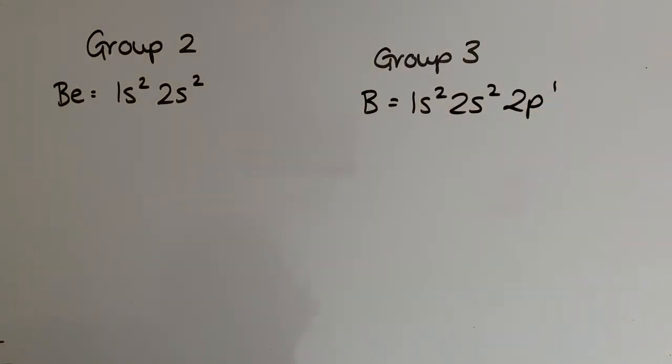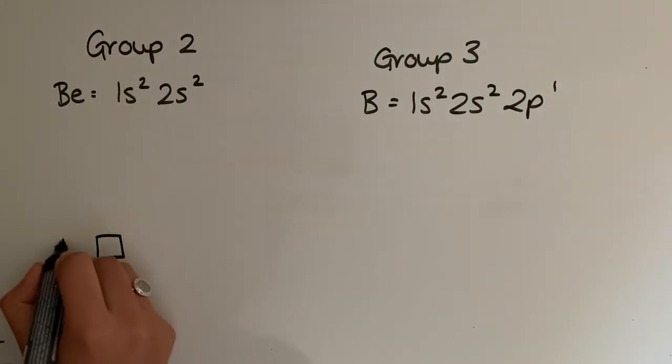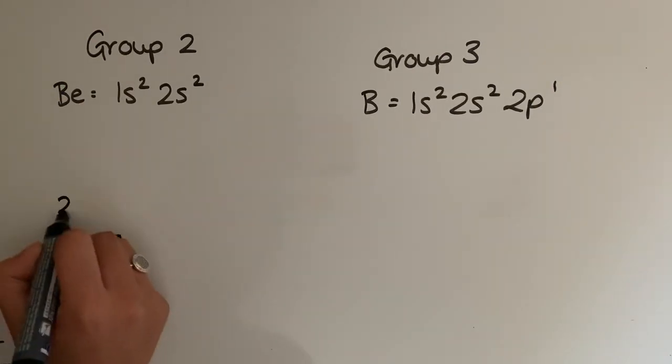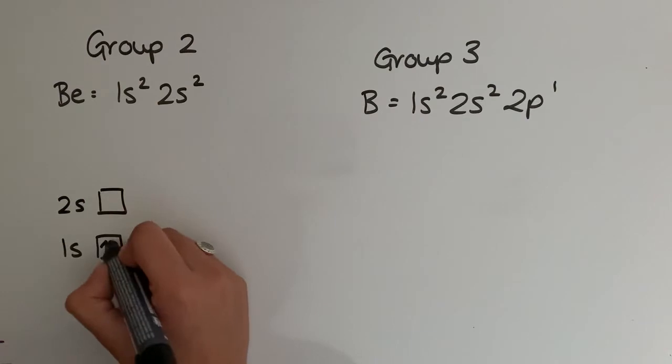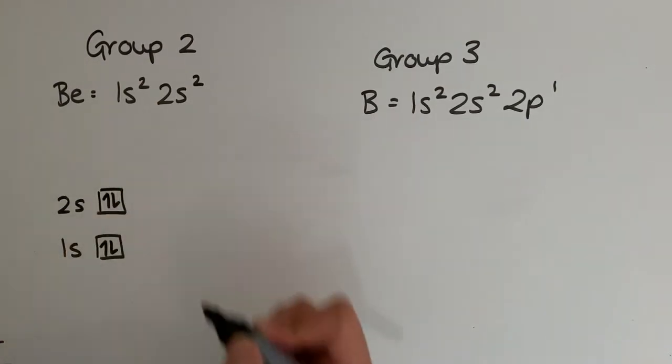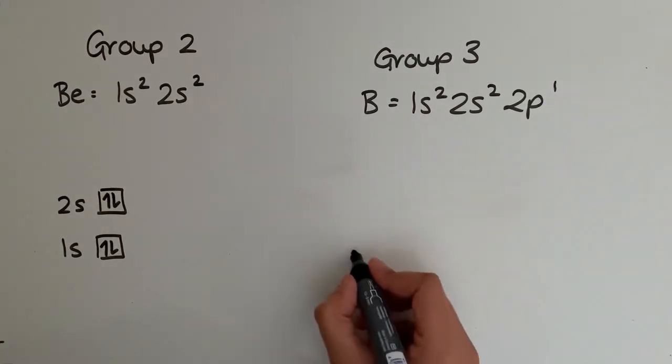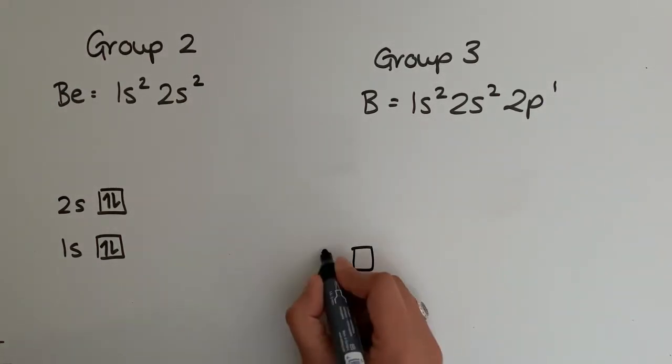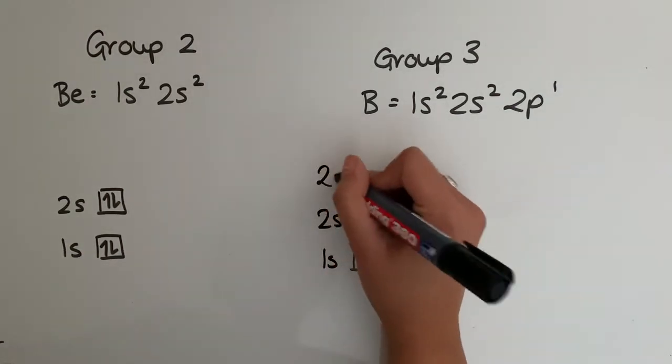I'm now going to show this in electrons in boxes. So 1s is lower than 2s, I'm going to put 2s higher up, and I'm just going to fill those in. Remember, you've got to have opposite spins if they're in one orbital.